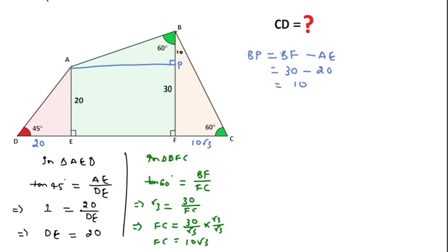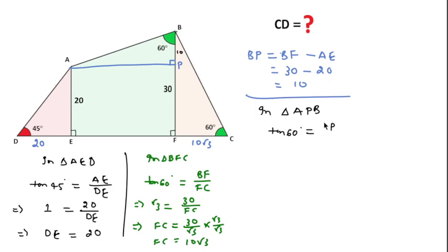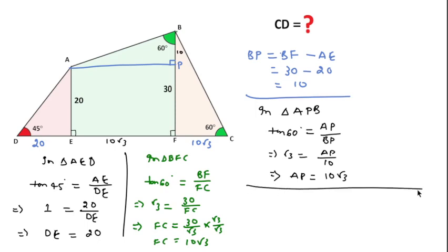Now in triangle APB, we can write tan60° equal to perpendicular over base. The perpendicular is AP and the base is BP. tan60° is √3 and BP is 10, so AP equals 10√3. Since AP is parallel and equal to EF, EF length is also 10√3.